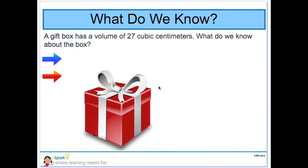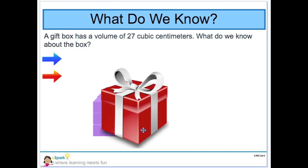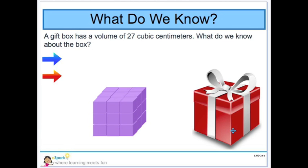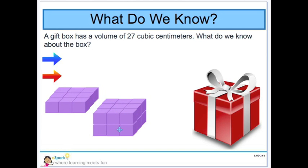So now, let's see if we can apply this idea of volume to a word problem. The problem says a gift box has a volume of 27 cubic centimeters. What do we know about the box? We know from our previous work that we can pull apart these layers and write an equation. 9 plus 9 plus 9 equals 27 centimeters cubed.